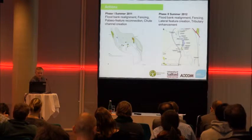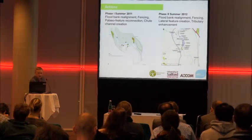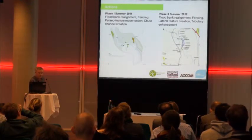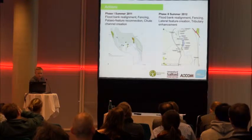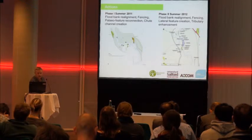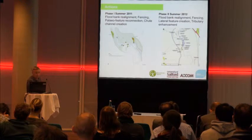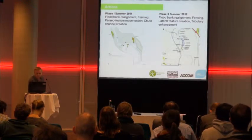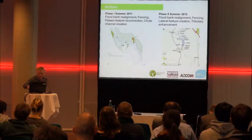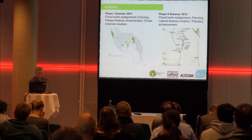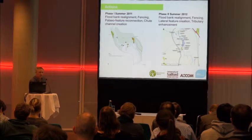In phase one and phase two, 2011 and 2012, quite a number of measures were undertaken - a lot of them on the floodplain. We did a lot of floodplain realignment, a lot of fencing to keep out sheep and cows, and we worked on paleo-feature reconnection and changing flow dynamics through construction of side channels. Phase three and phase four have also gone ahead and are largely linked to floodplain realignment.